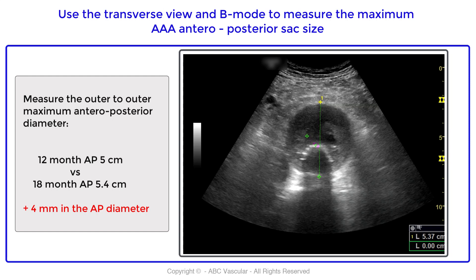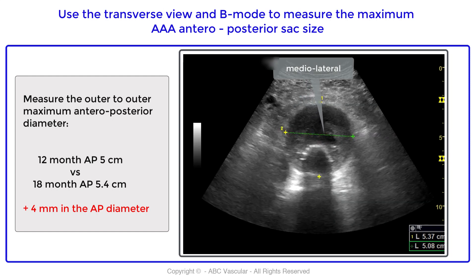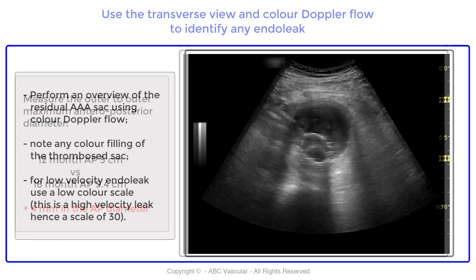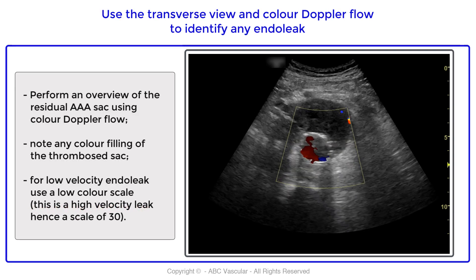We can also measure the medial-lateral diameter as the walls are clear. This confirms a 4 mm sac size increase compared to the annual follow-up ultrasound.